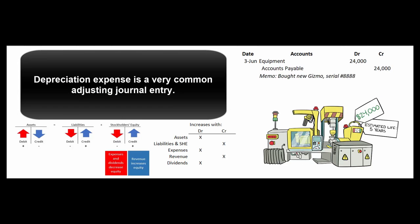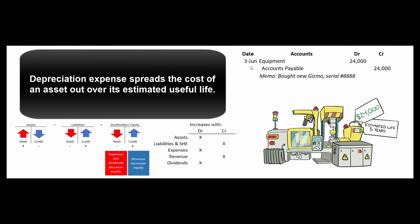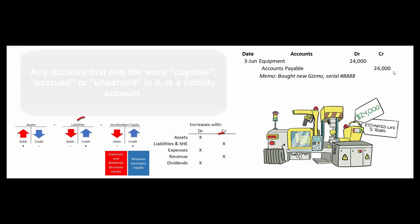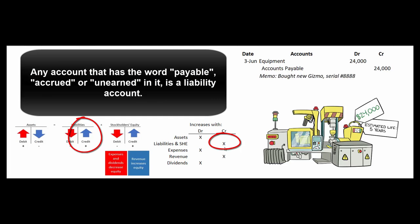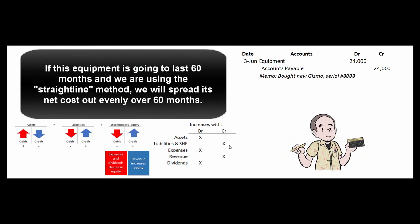And depreciation expense is another example of an adjusting journal entry. Suppose we buy a piece of equipment for $24,000 that's going to last us five years. It would be incorrect to book all that $24,000 as an expense in that first month because it's going to last us for 60 months. So what we'll do is we'll debit the asset equipment for $24,000 and credit accounts payable for $24,000. Accounts payable is a liability account. Any account that has the word payable, accrued, or unearned in it is a liability account. So accounts payable increases with credits. Then if we're going to use the straight line method, we're going to write off one sixtieth of that equipment every month.